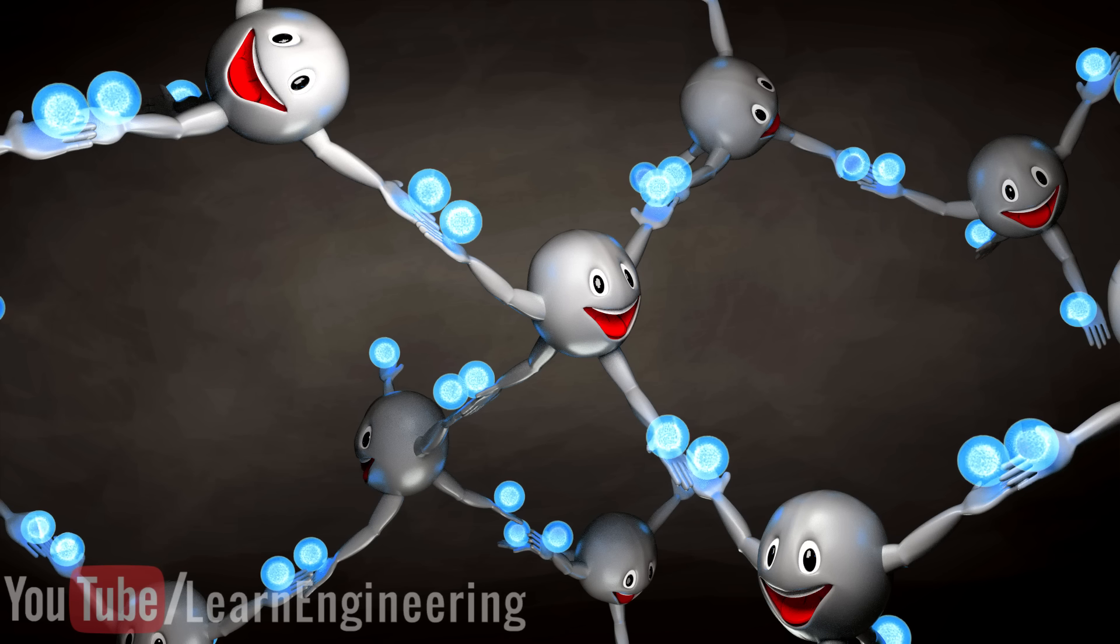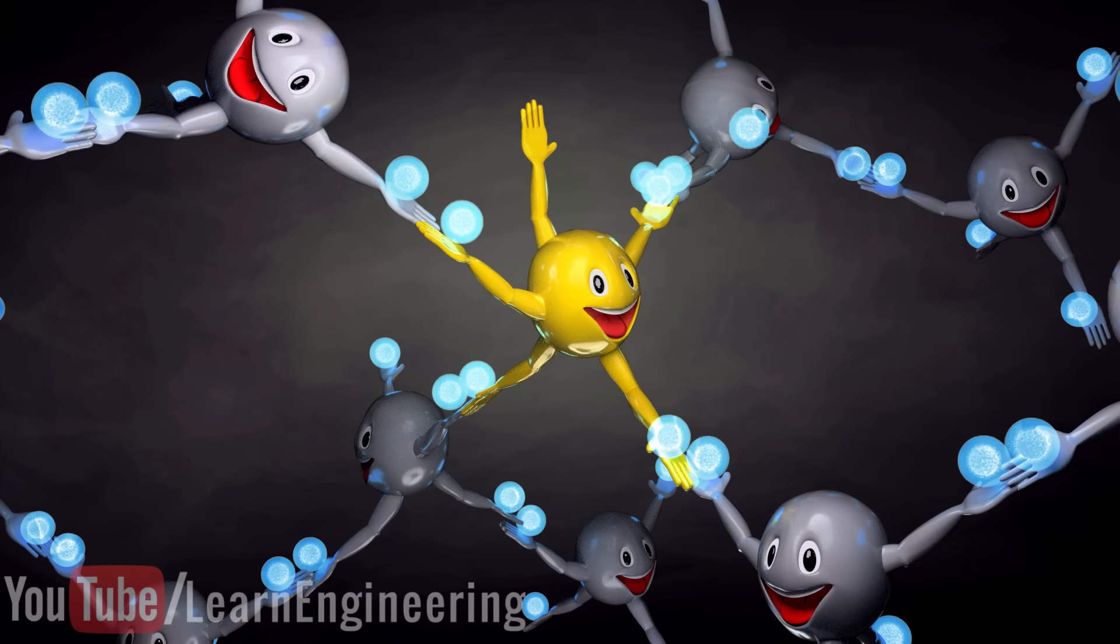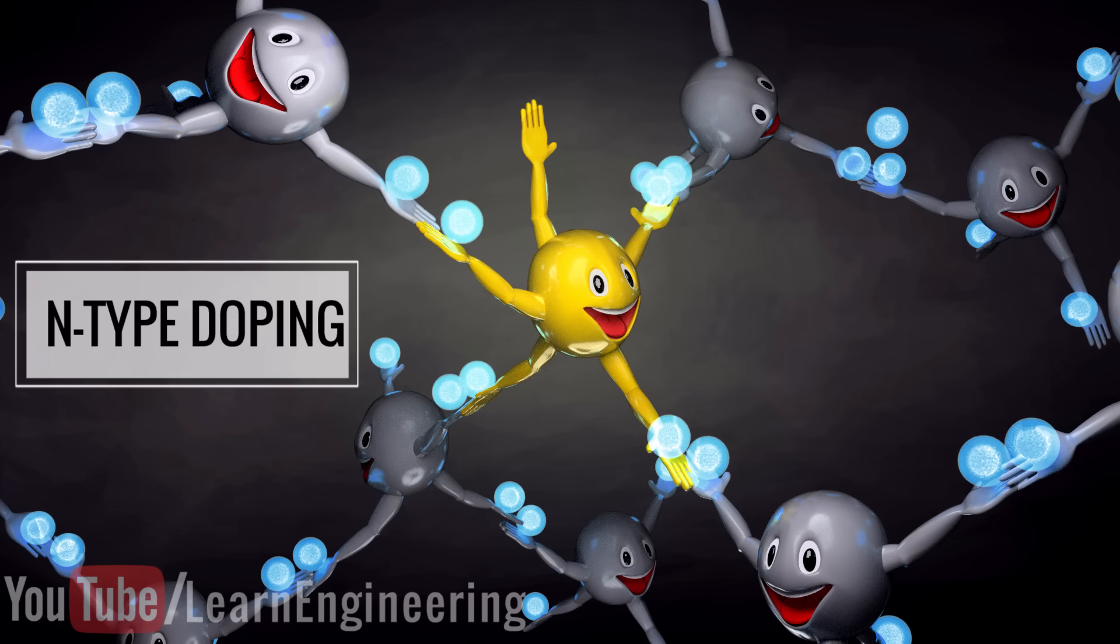Pure silicon does not have any free electrons and because of this its conductivity is very low. However, when you inject an impurity which has extra electrons into the silicon, the conductivity of the resultant material increases dramatically. This is known as N-type doping.